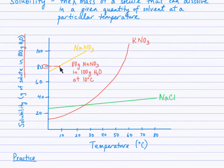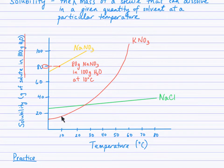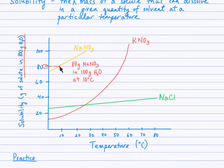Does the solubility change? Can we get more than 80 grams if we raise the temperature to 20 degrees? Sure we can — we're up over 90 grams of solute. Does every solute have the solubility of sodium nitrate? It doesn't look like it. At 10 degrees Celsius, for the red curve KNO₃, we can get about 17 or 18 grams of KNO₃ to dissolve. So potassium nitrate is not very soluble at 10 degrees Celsius compared to sodium nitrate.